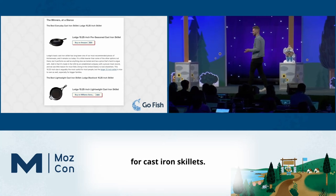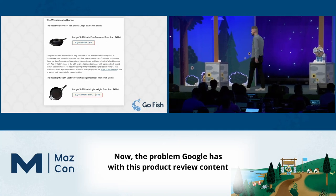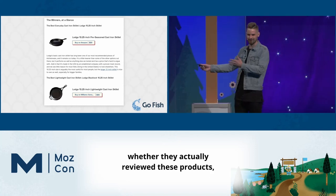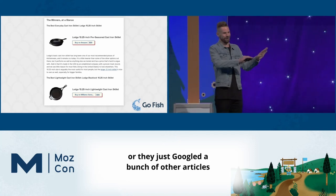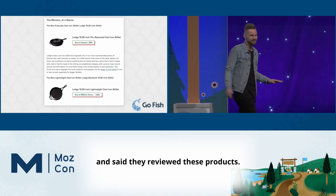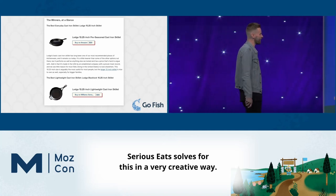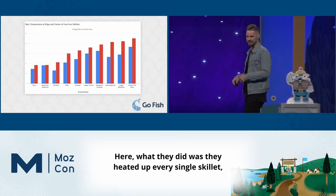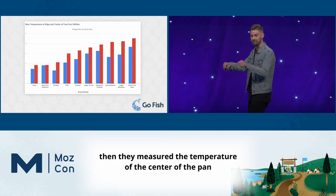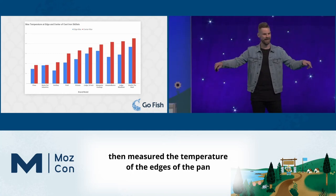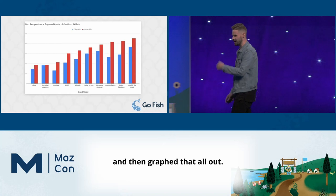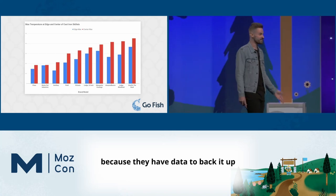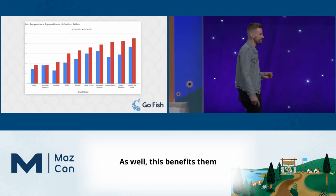A great example is Serious Eats and their product review page for cast iron skillets. The problem Google has with product review content is it's very hard to trust whether they actually reviewed those products or just googled other articles. Serious Eats solves this creatively — they used custom data and graphics. They heated up every single skillet, measured the temperature at the center and edges of the pan, and graphed it all out. This shows Google and users that yes, they actually reviewed this content.